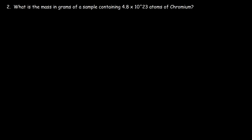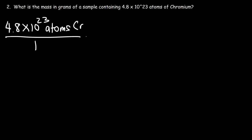Here's another example. Number two: what is the mass in grams of a sample containing 4.8 times 10 to the 23 atoms of chromium? We're going to follow the same process. Let's start with what we're given: 4.8 times 10 to the 23 atoms. The substance is chromium. Let's convert that to moles using Avogadro's number.